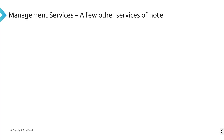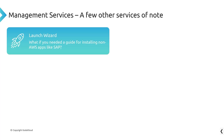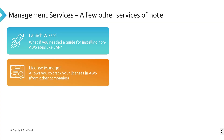Here are a few other services worth noting for the exam. Launch Wizard provides a wizard to walk you through installing third-party applications like SAP on AWS in a best-practice way. License Manager lets you track licenses — for example, Red Hat Enterprise Linux instances — and you can actually configure it to stop the launch of further licensed operating systems in your AWS account if you've exceeded your license count.